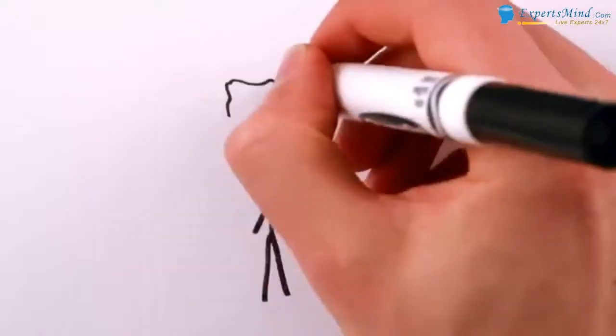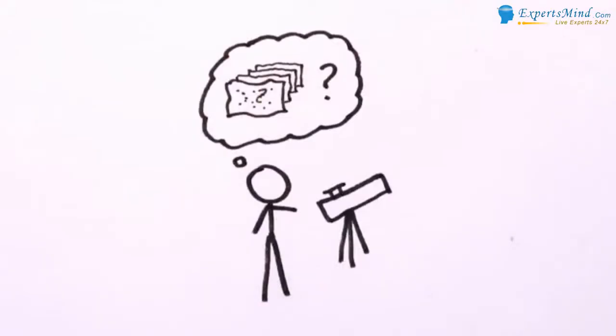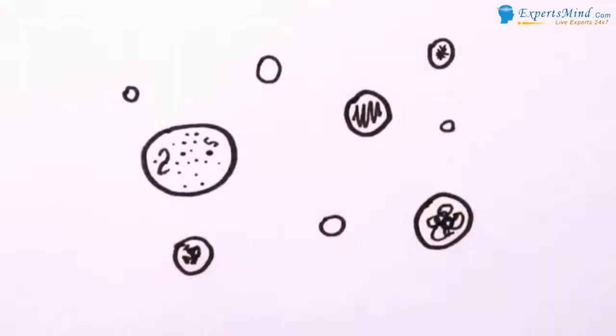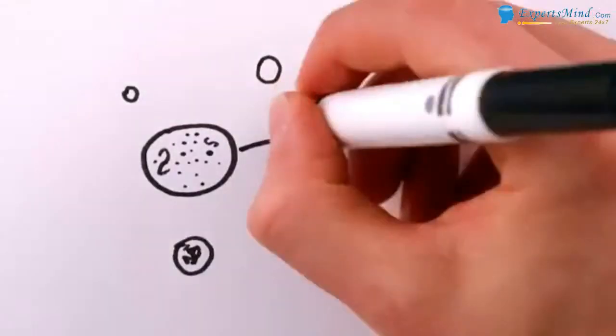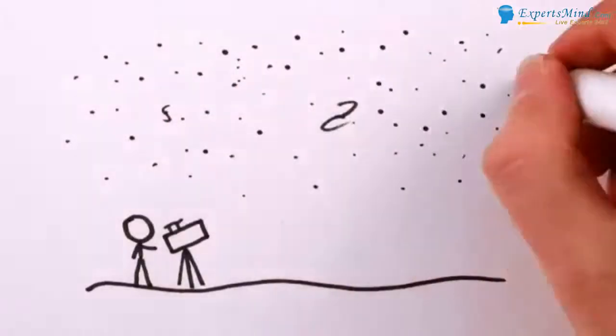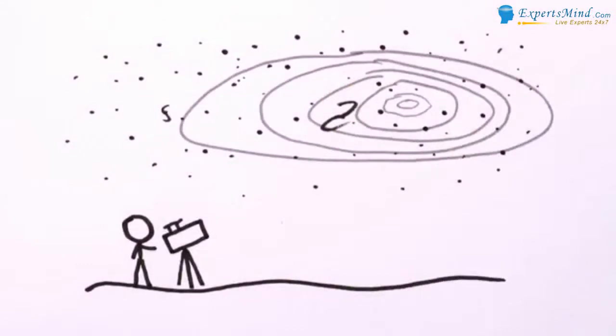But that's not to say that we couldn't test these multiverse hypotheses. For example, if our observable universe were really just one of many disconnected bubbles or membranes, and if it happened to collide with another bubble or membrane sometime in the past, then that collision would certainly have had some sort of effect on what we see when we look up at the night sky.